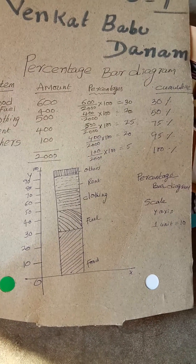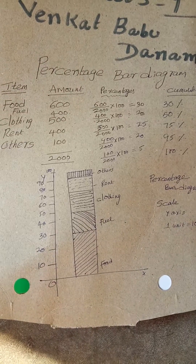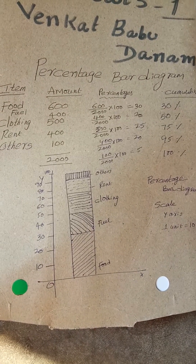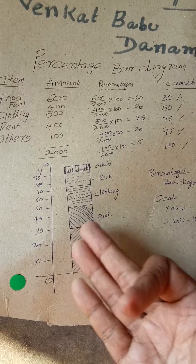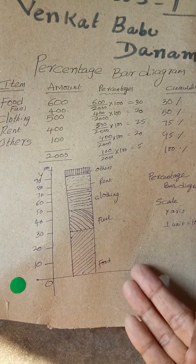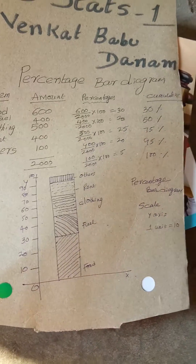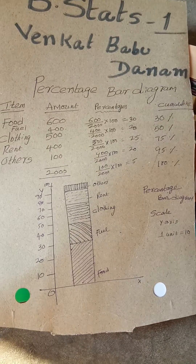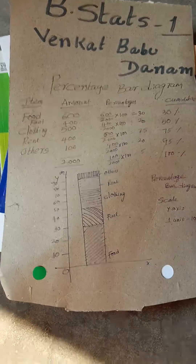In the exam, I am expecting they will give two families — Family A and Family B — and you have to draw the bar diagram for each. Make use of this class, my dear students. Do subscribe to my channel.